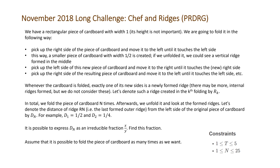Let's denote such a ridge created in the kth folding by rk. In total, we fold the piece of cardboard n times. Afterwards, we unfold it and look at the formed ridges. Let's denote the distance of the ridge rn — the last formed outer ridge — from the left side of the original piece of cardboard by dn. For example, d1 equals ½ and d2 equals ¼.